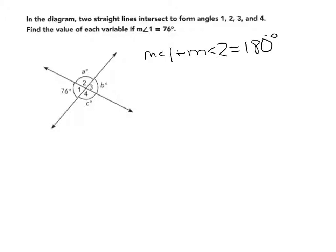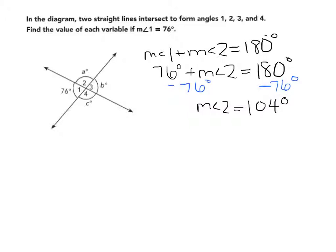We know the measure of angle 1 is 76 degrees. We don't know the measure of angle 2. We know that they have to add up to 180 degrees, so we can subtract 76 degrees from both sides to figure out that the measure of angle 2 equals 104 degrees. The measure of angle 2 equals A degrees, so A equals 104.